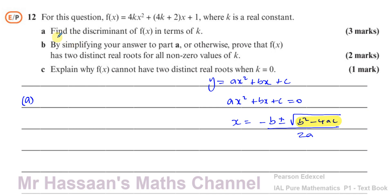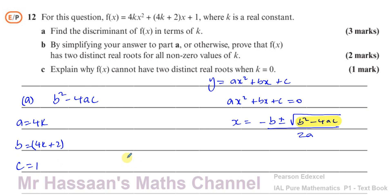So for part a, we need to find b squared minus 4ac. In our equation, a is the coefficient of x squared, which is 4k; b is the coefficient of x, which is 4k plus 2; and c is 1. So b squared minus 4ac equals (4k plus 2) squared minus 4 times 4k times 1.